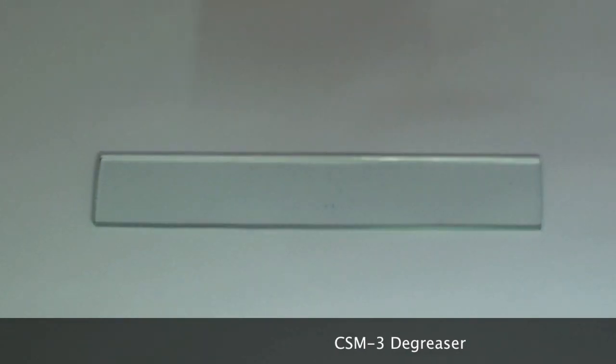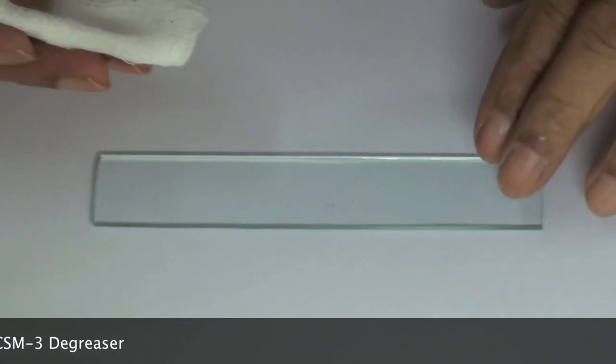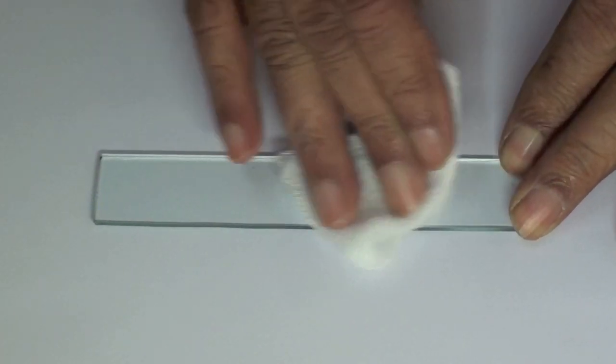The first step in strain gauge installation is degreasing. This is achieved by spraying CSM-3 degreaser on a gauze sponge and wiping the surface of the beam thoroughly to remove all traces of oily and greasy substances that are detrimental to gauge bonding.